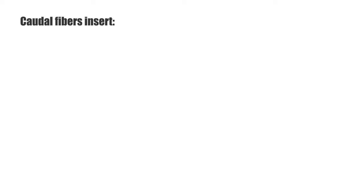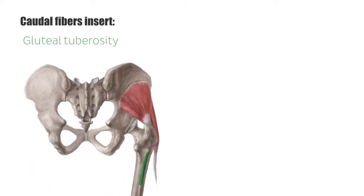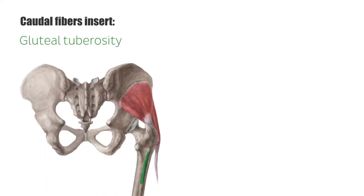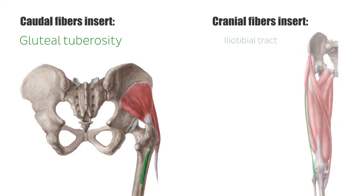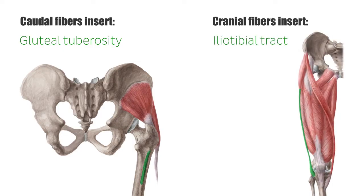Its caudal fibers insert at the gluteal tuberosity of the femur. On the contrary, the cranial fibers go over into the iliotibial tract, a strong fibrous band at the outside of the thigh, inserting at the lateral condyle of the tibia.